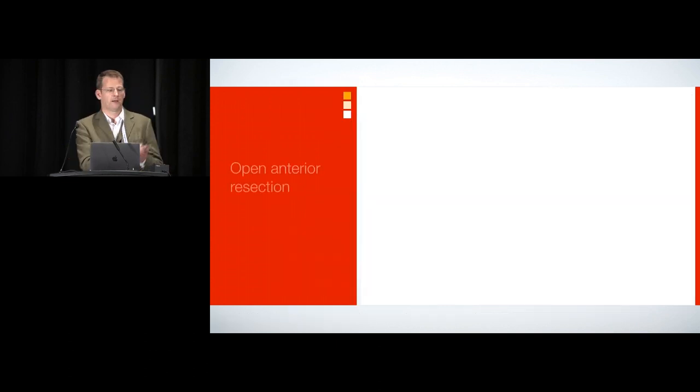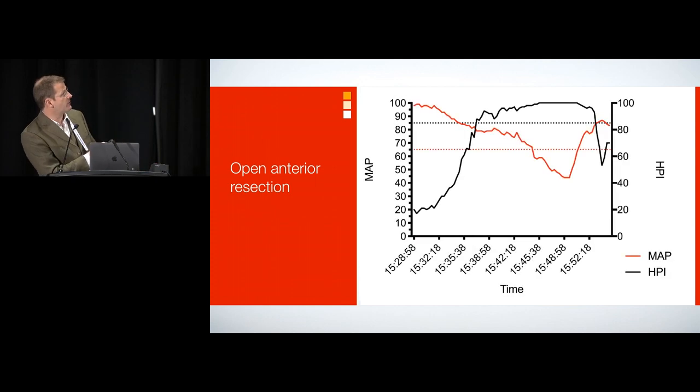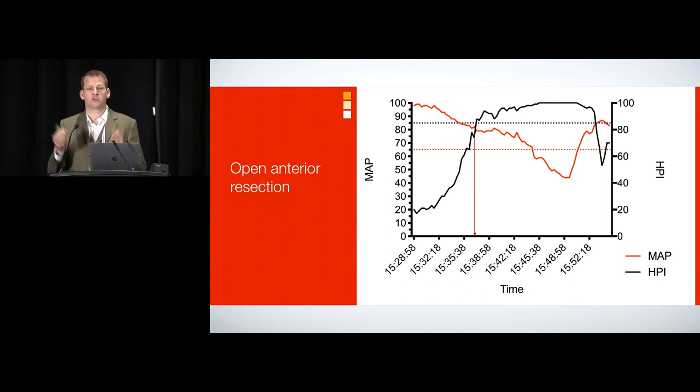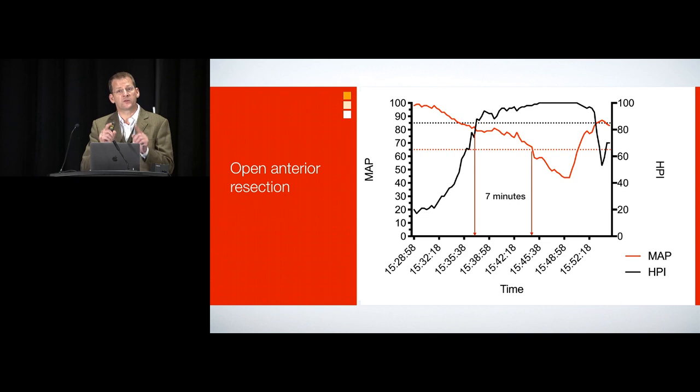What does it mean? Here's a patient having an anterior section. The black line is HPI. The red line is the mean arterial pressure. So HPI breaches the threshold of 85, round about this point here. And we don't see hypotension for seven more minutes. And the whole premise and the point of this technology is that in that period, you can intervene to treat the underlying cause of that instability and avoid hypotension and hence avoid those small cumulative durations that add up to patient harm.